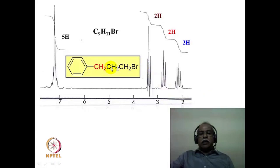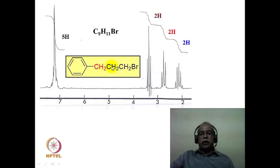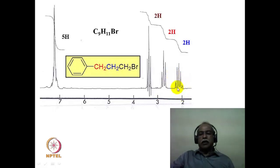This molecule contains a PhCH2-CH2-CH2Br moiety. The central blue CH2 has four coupling partners (two on each side) and appears as a quintet (5-line pattern). The CH2 adjacent to bromine and the benzylic CH2 each appear as triplets. Chemical shift values follow the expected order: CH2Br (~3.5 ppm) > benzylic CH2 (~2.8–2.9 ppm) > central CH2 (~2 ppm). The aromatic signal shows 5-hydrogen intensity as a multiplet.